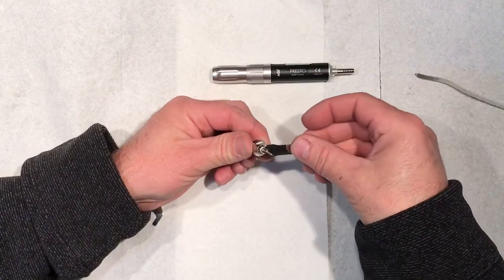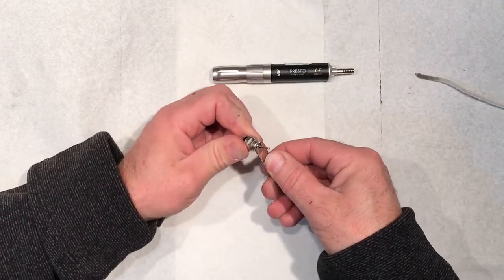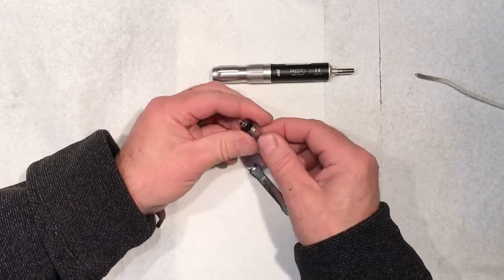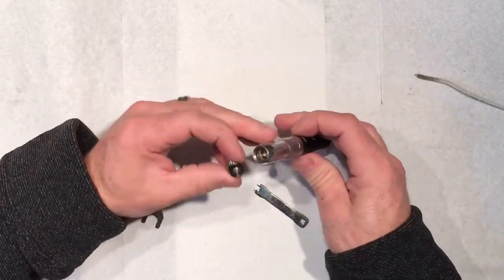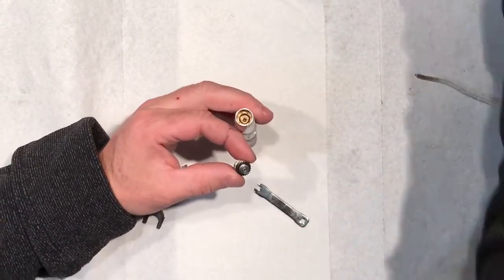Once the thread is started and threaded on there, I'm just going to take my little wrench that came with the tool and I'm just going to snug it up. Next thing I'm going to do is put the cartridge in the handpiece.